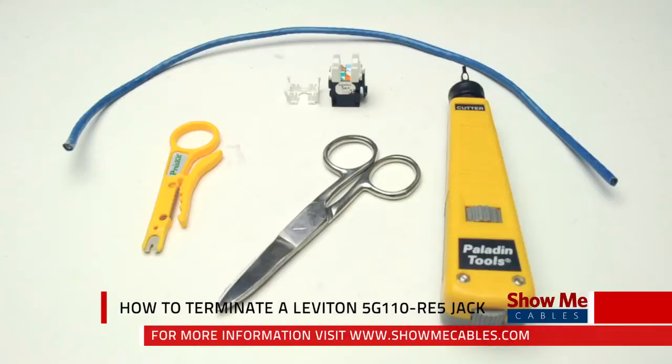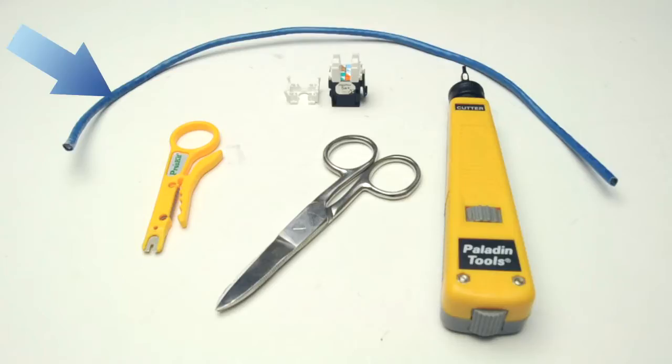The materials required for this installation are CAT-IV cable, a Leviton 5G110 jack, an impact punch down tool, technician scissors, and a cable stripper.